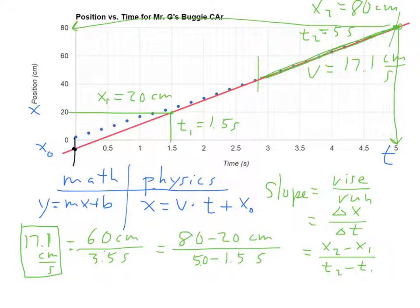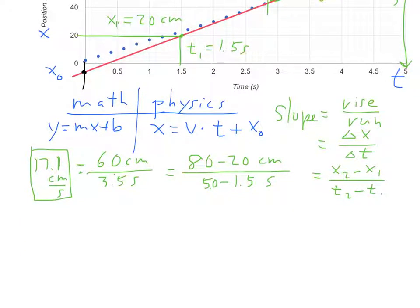So finishing this off here, what is our equation for this line? It is x equals 17.1 centimeters per second times t plus the initial position. Obviously, ours started at zero. But we're trying to come up with an equation of a line that would let us figure out the position at some high number for t that's off of our graph.